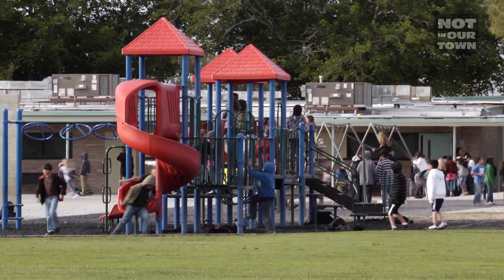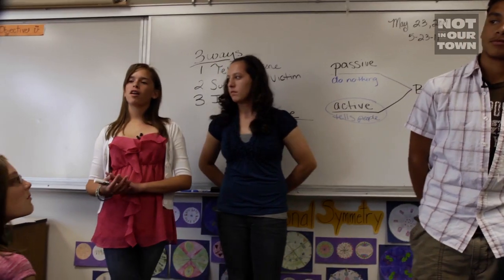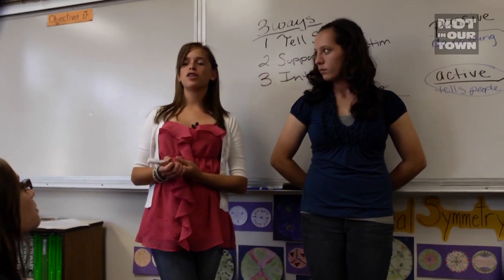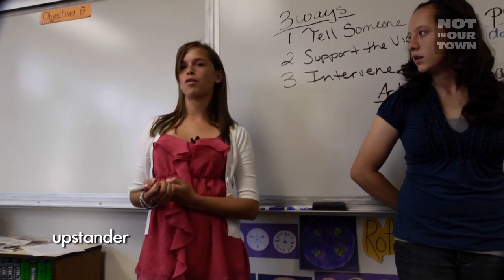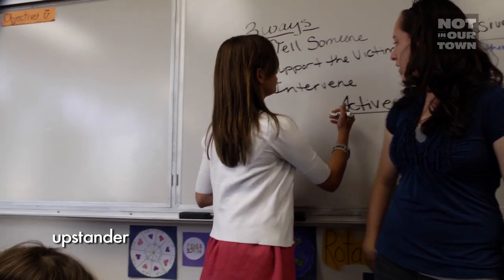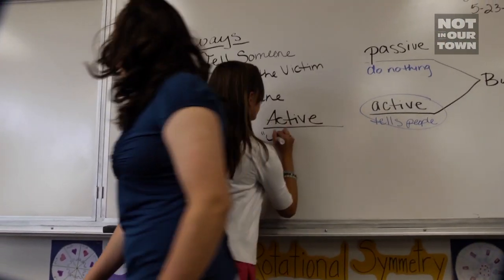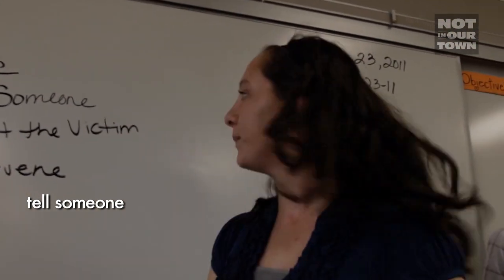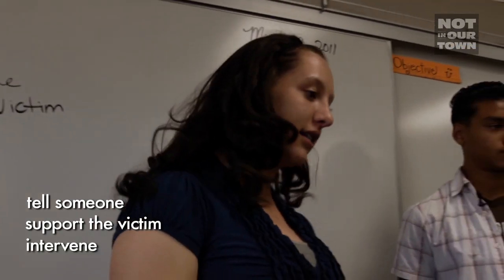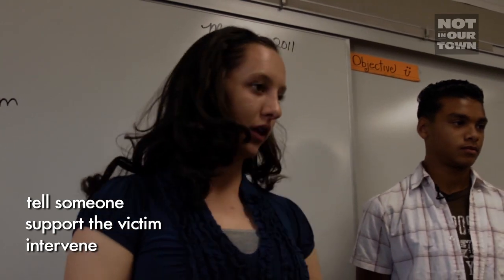Our goal here today is to show you guys how to be an active bystander instead of being a passive bystander. Another way of calling an active bystander is an upstander, because they're standing up for something or someone. To be an active bystander, you could tell someone like your teacher, you could support the victim, and you could intervene — meaning telling the bully to stop.